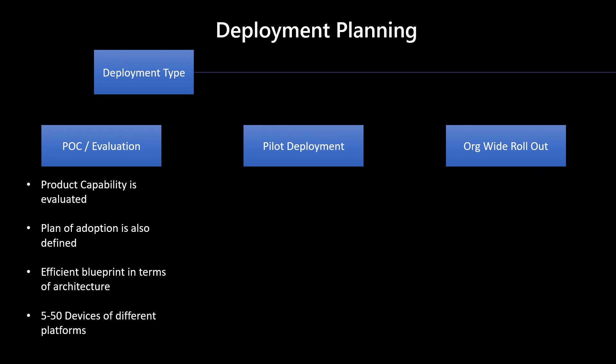The first stage is evaluation for the product capability itself. Once you have evaluated the product — you know what the documentation says and how it exactly works — this is intelligence that will help you plan your adoption. If there are 50 different capabilities for a product, you may not want all of them, but you'll have a better plan because you've seen things working on the ground. You know what exactly works and how efficiently it can be operationalized.